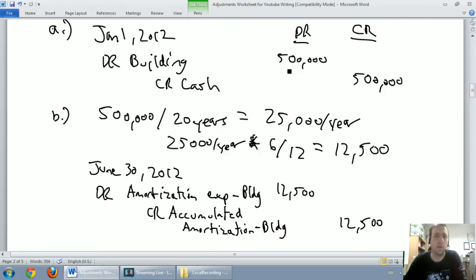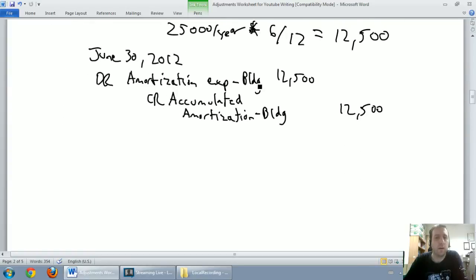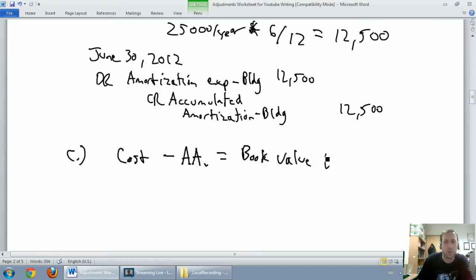Well, you can look at it and say, okay, it's a $500,000 building, but we've said it's lost $12,500 of its value. So, that's exactly what we're going to do. The book value calculation is cost, what we paid for it, minus accumulated amortization, which I'll call AA, equals book value. And sometimes that's called net book value.